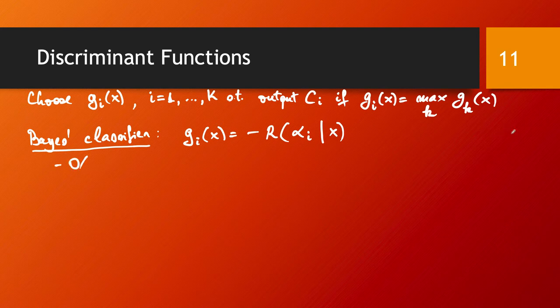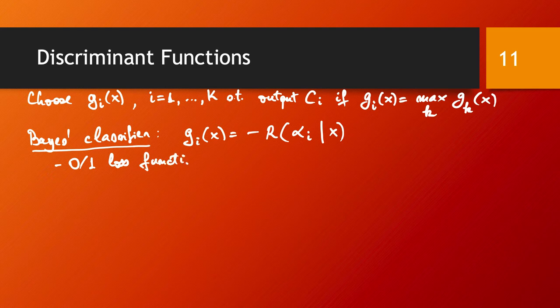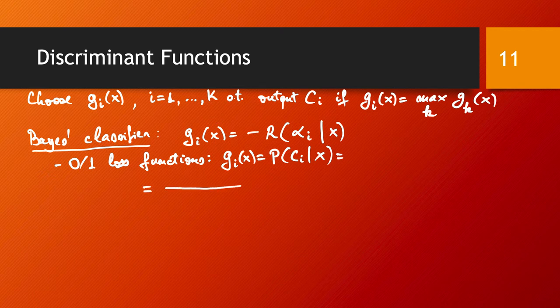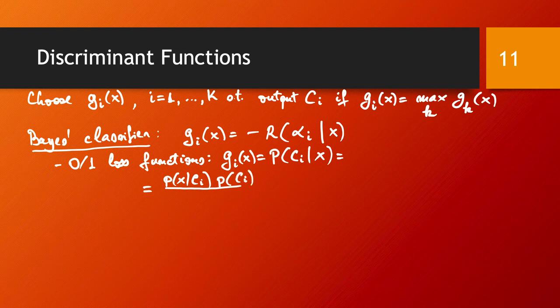In the case we are using 0,1 loss functions, this becomes g_i of x being the probability of class c_i given input x. And according to Bayes rule, this is the probability of x given c_i times the probability of c_i divided by the probability of x.